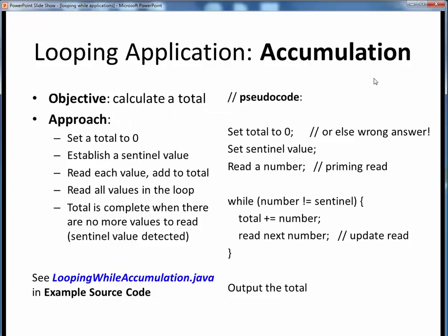The first standard looping application we'd like to consider is accumulation. Here the objective is simply to sum up the total of some unknown quantity of numbers. Here on the right is the pseudocode for doing that. First we initialize some running total to zero, because if we don't do this first we'll get a wrong answer. We also set up some sentinel value to check against. Then we read the first number in the series which serves as our priming read. We check that first number against the sentinel value and enter the while loop. As long as the number is not equal to the sentinel value, which is our loop continuation condition, we add that number to the running total using the arithmetic shortcut operator. Then we read the next number and repeat the process until we encounter the sentinel value and our total is complete.